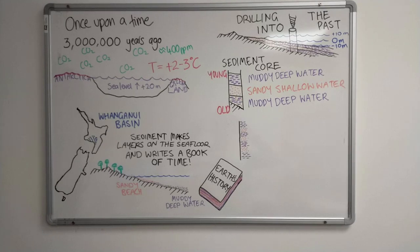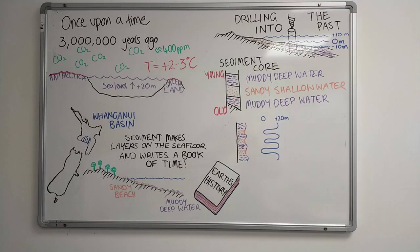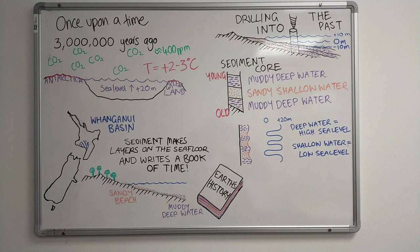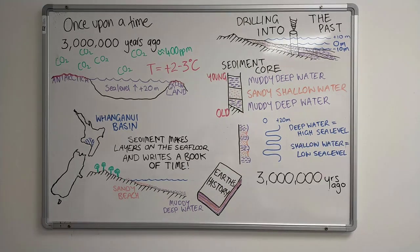These alternating sediment layers stack up and can be interpreted as changing sea level through time. Where deep water equals higher sea level and shallow water equals lower sea level. And that's how we know,